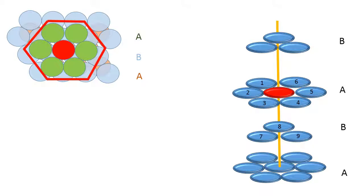If I place the fourth layer above the red colored sphere, I will see that there would be again 3 spheres touching the red colored sphere. And therefore the coordination would be 12. Hence, I can say that whenever you have a hexagonal closed packing, the coordination number would be 12.